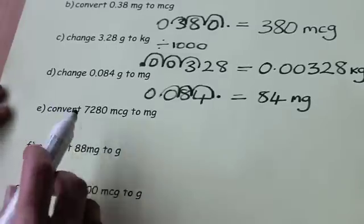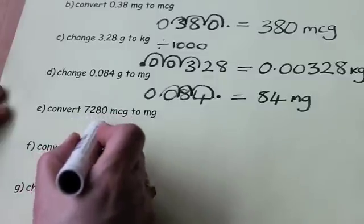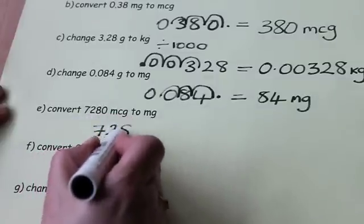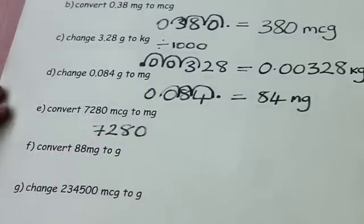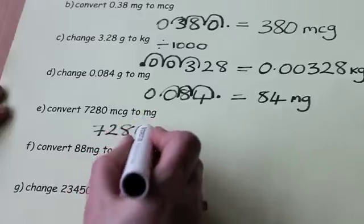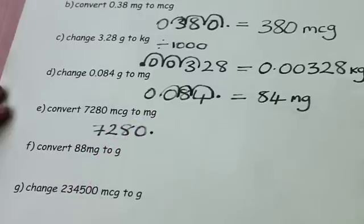Now this is interesting because if I write down the number 7,280, there is no decimal point for me to move. If this is the case, if you have a number that doesn't have a decimal point, then it is always, always here at the end of the number.